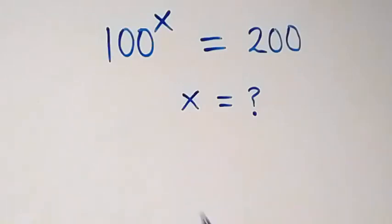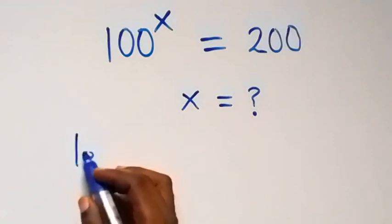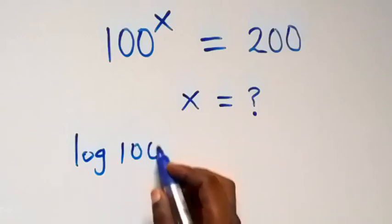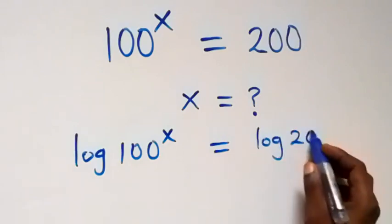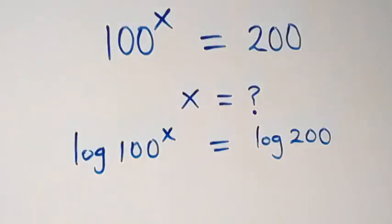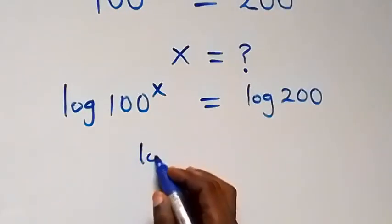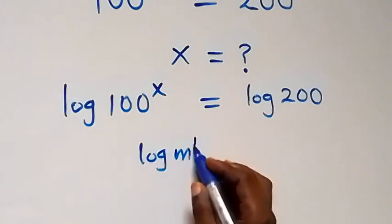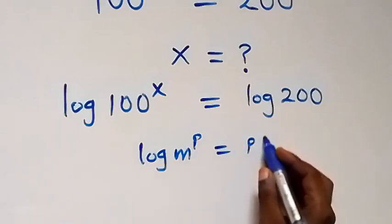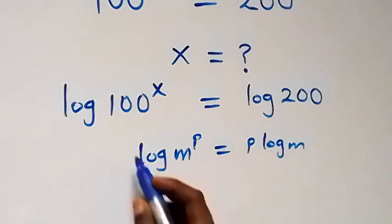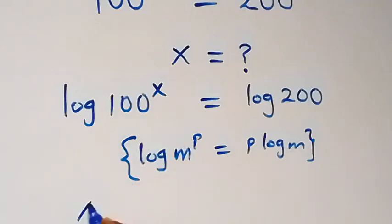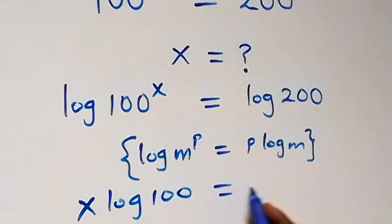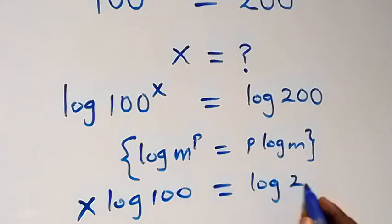Hello, you are welcome to Solve for X. Here, let's take the log on both sides, and we have log of 100 raised to power x equals log of 200. Then applying the power law of logarithms — where log m raised to power p is the same as p·log m — x can come to the front, giving us x·log(100) equals log(200).